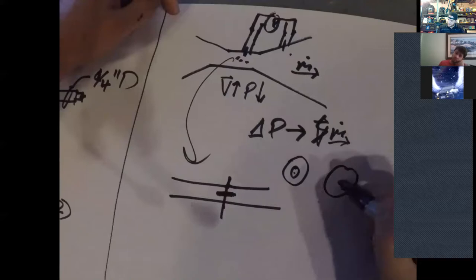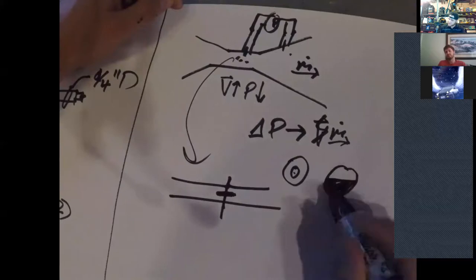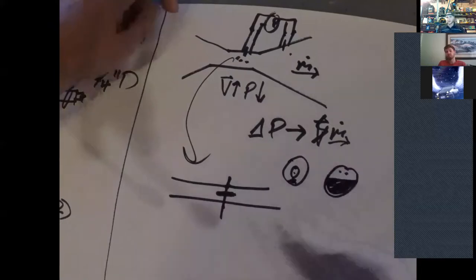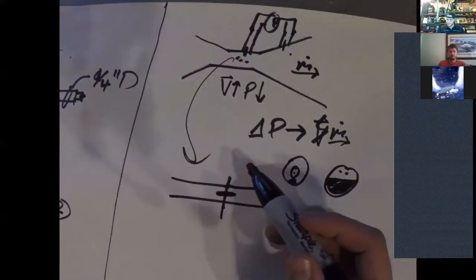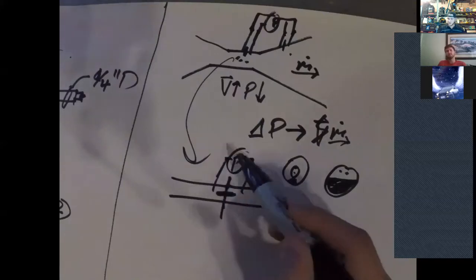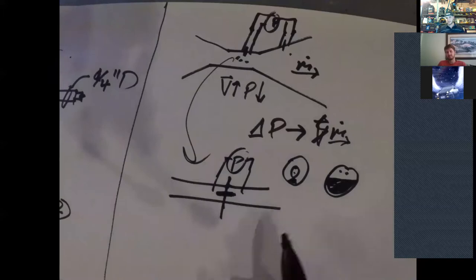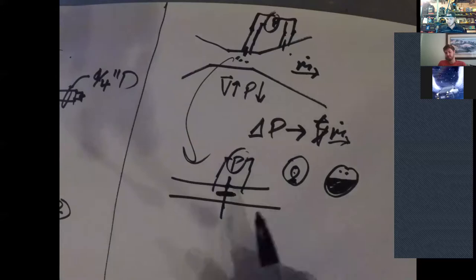So like if you're worried about having entrained solids, your orifice might look like a little smiley face, right? So this is your hole. So that way your solids don't get stuck up against the face of this orifice plate. And your orifice plate looks like a happy smiley face, right? But really all you're doing is just measuring the pressure across those.